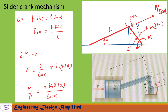Now let us take moments about point A. The applied moment M acts in the counterclockwise direction, and the moment due to force P/cosα acts in the clockwise direction. Setting ΣM_A = 0, we write M = (P/cosα) × b·sin(θ + α). After rearranging, we get M/P = b·sin(θ + α) / cosα, which is exactly the expression we needed to prove.